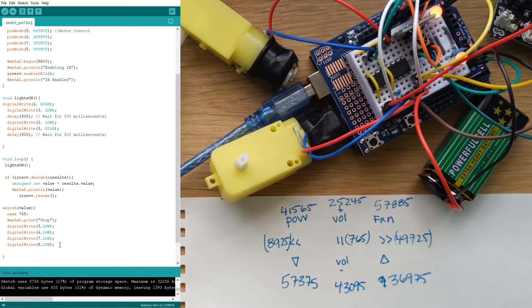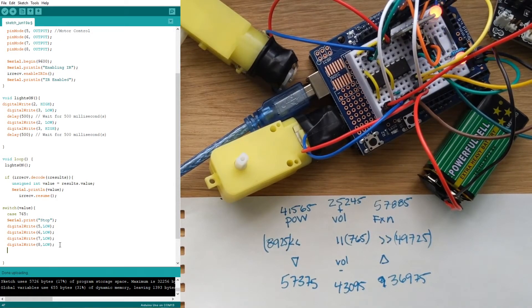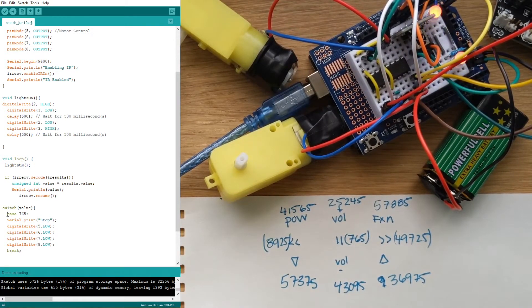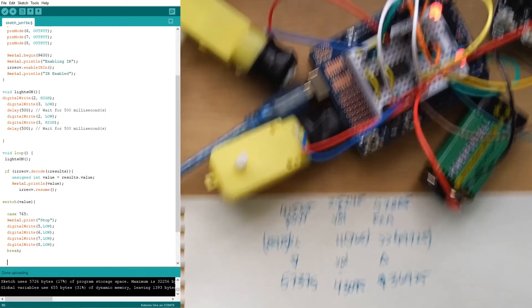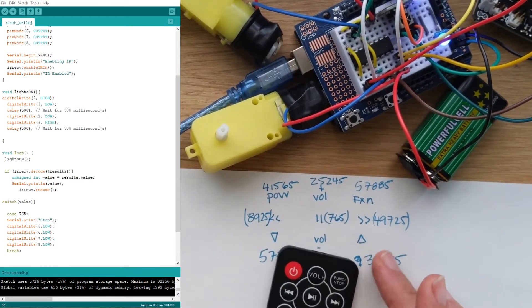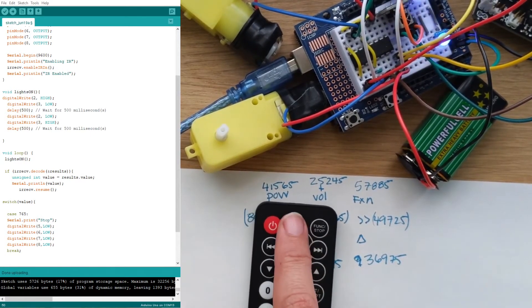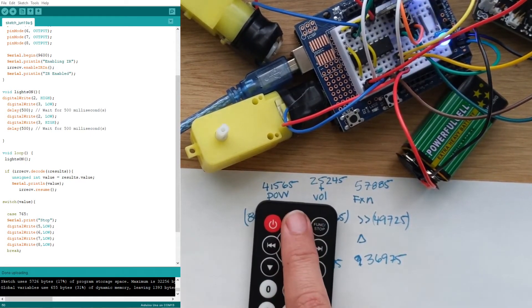Right now we want to go for a new case and at the end of each case you just write a break with a semicolon. Give yourself a little space even up here between your cases and that will help you keep your code organized. Now let's say I want to move forward and maybe on my remote this volume plus sort of feels like that would be the most logical place for me to go forward and the case number for that is 25245.